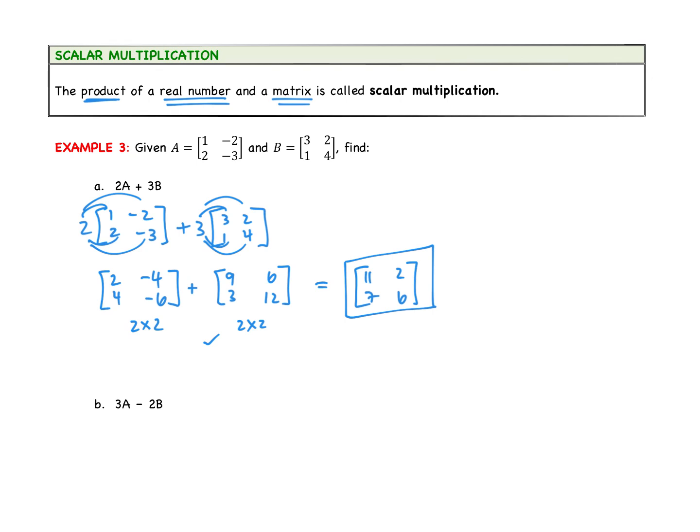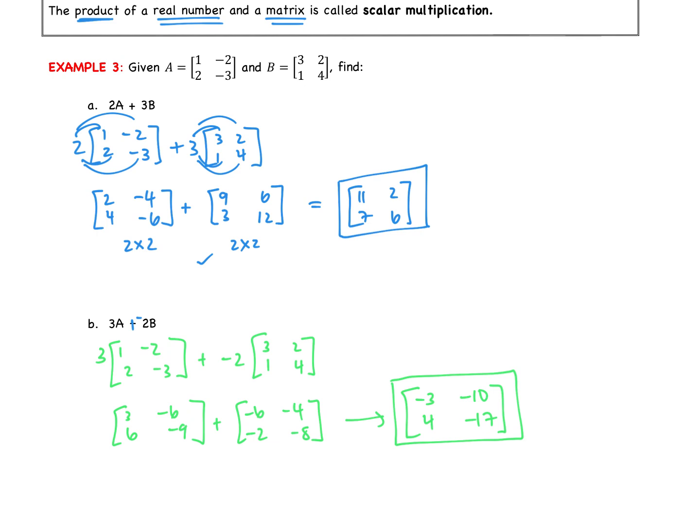I'm going to have you all try B. I have one suggestion for you though first. Nobody likes to subtract. So instead of subtracting, think of this like adding a negative. So change it to adding a negative. Take 2 minutes and complete B, please. Here's what I got. Negative 3, negative 10, 4, negative 17. You all agree? Great. That's the first set of notes. That's going to be your first set of homework. And if you noticed on the front page, it was 1 through 7 odd. So it's not even that many problems.